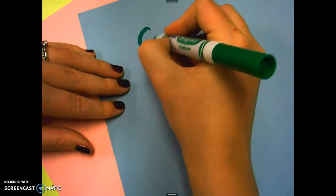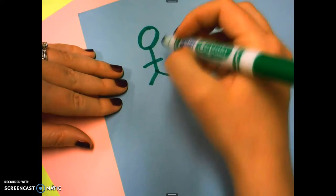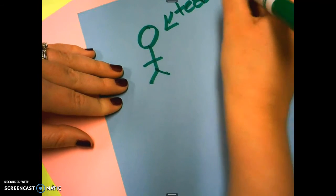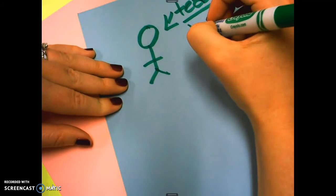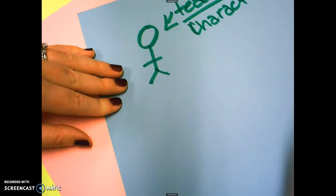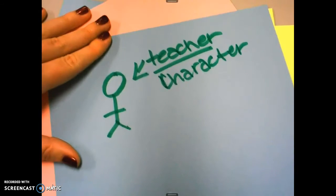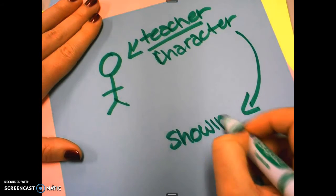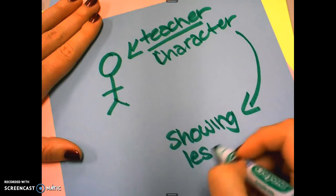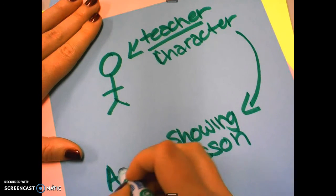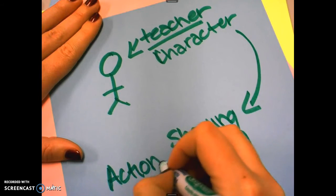And the way I like to think of it is the character of the book is the teacher. And the character or the teacher is showing you a lesson. So they are showing the lesson, the moral, the message, through their actions and events.